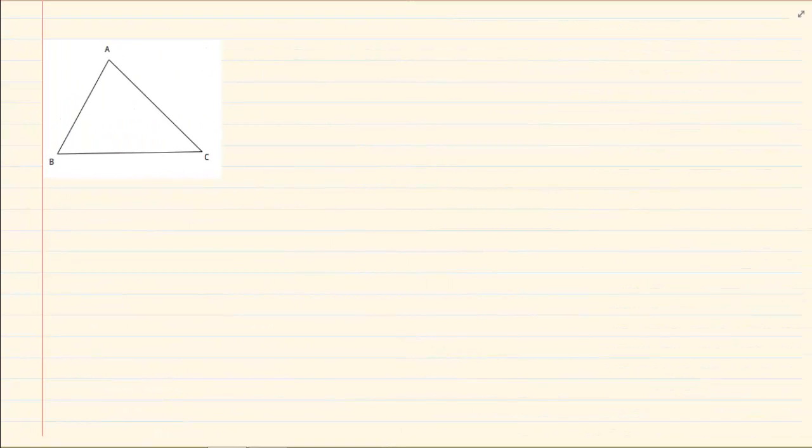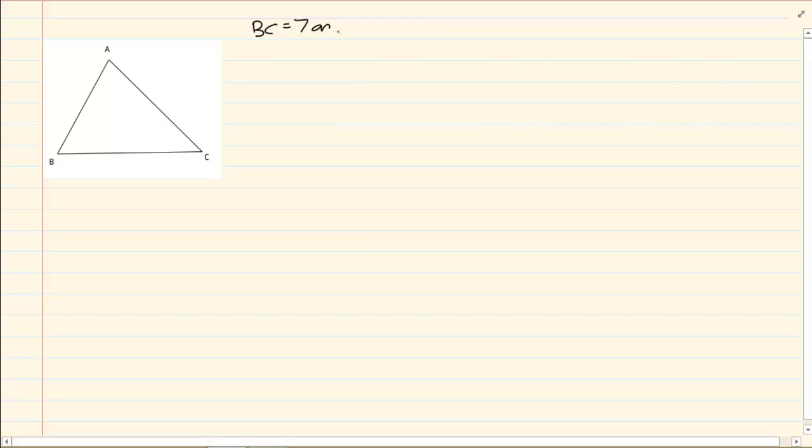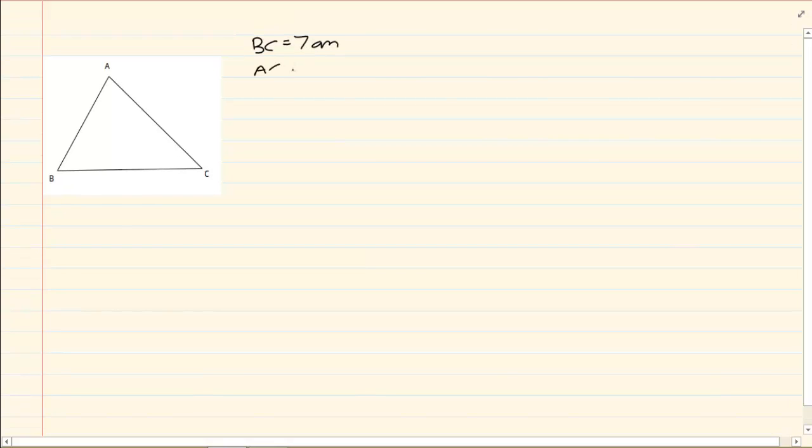If you are given the following. It says that you have a triangle ABC. BC is 7 cm. AC is 6 cm. And angle c is equal to 27.6 degrees.